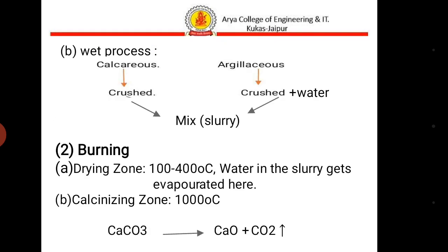In the wet process, the raw materials are crushed separately, but the argillaceous material is mixed with water. Then both calcareous and argillaceous materials are mixed in proper ratio and converted into a paste called slurry.